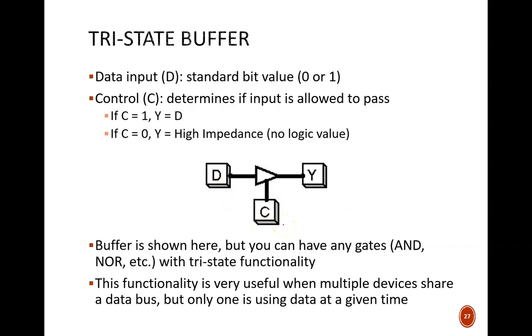When control or C equals 1, the input D, could be a 1 or a 0, passes straight through to the output Y. But if C equals 0, then that signal is cut off, and Y is in a high impedance state.